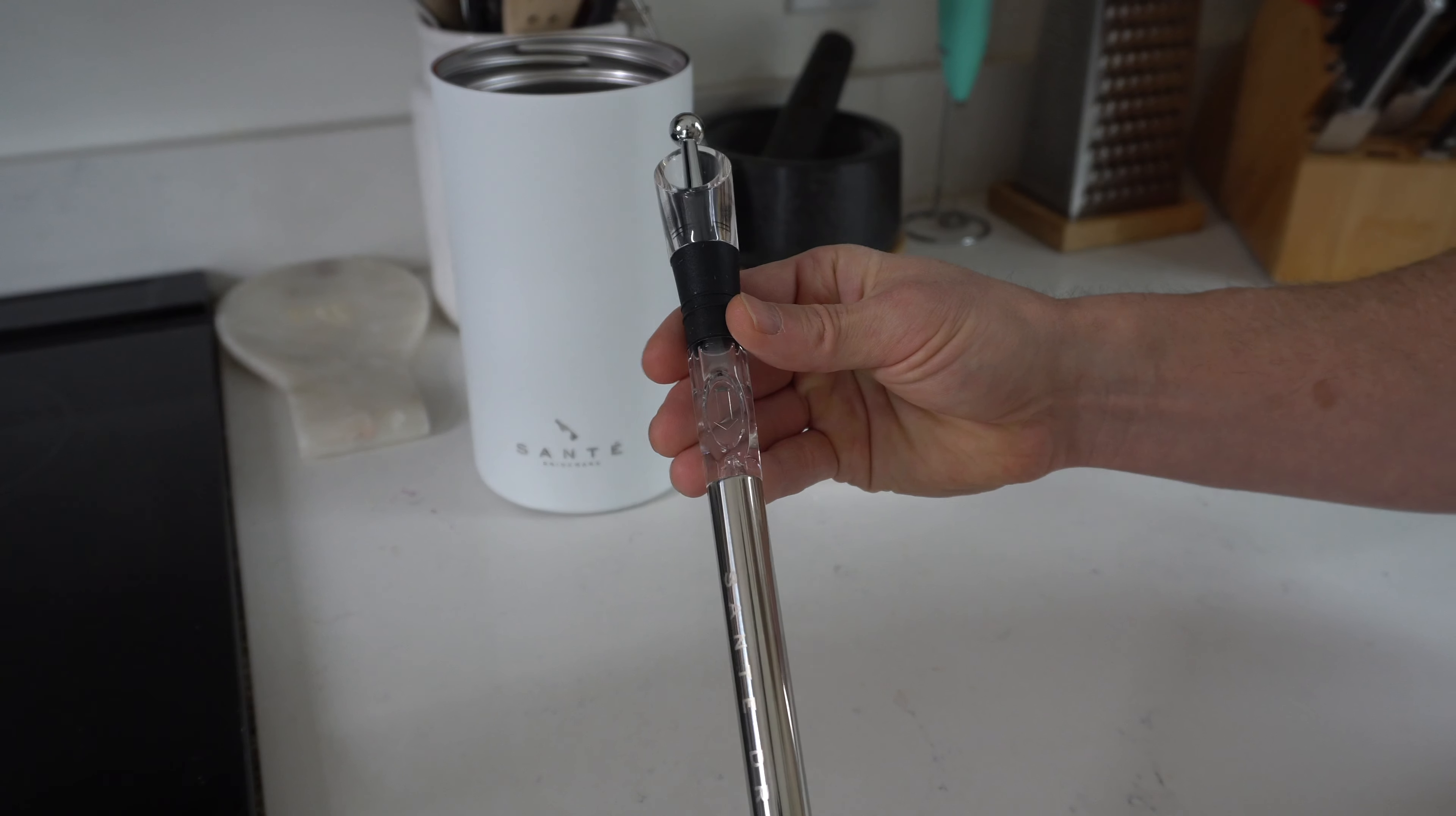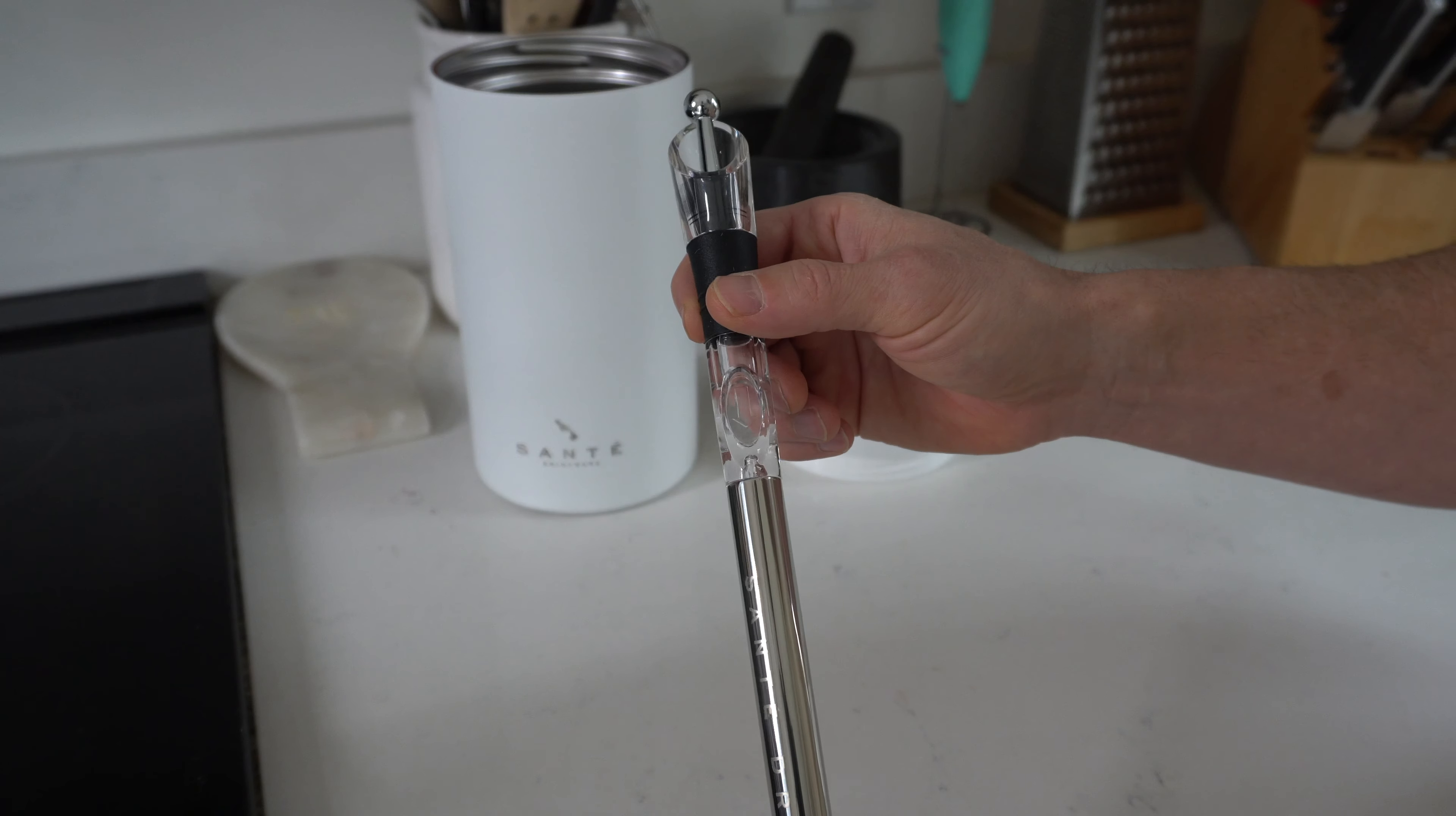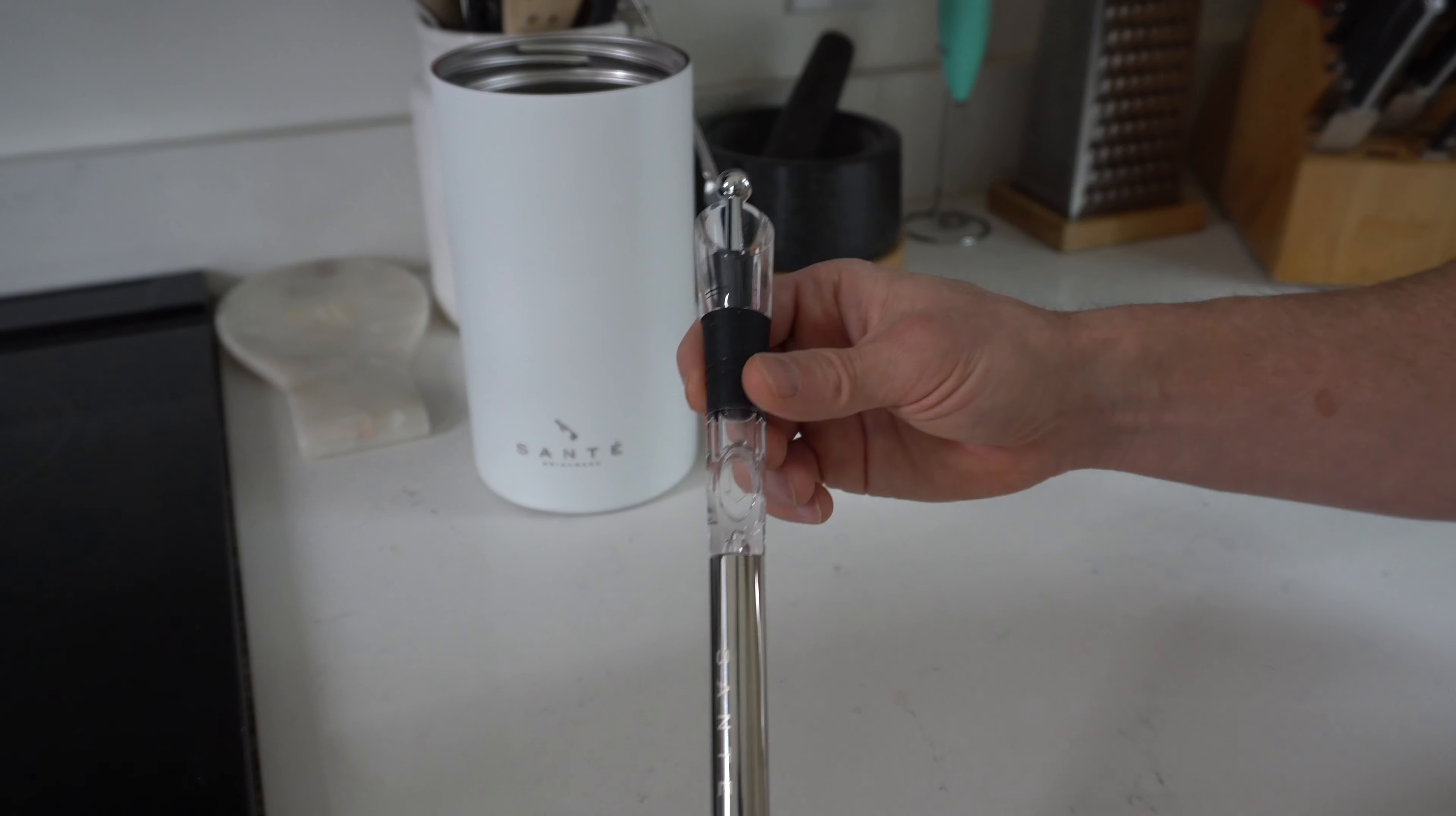Then we've got the pour spout right here. It's got an aerator at the bottom so as you pour out it'll aerate the wine, open up the flavor quicker.